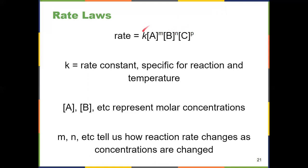The rate constant K is specific to the reaction — every reaction has its own rate constant — and it's also determined by temperature and surface area. If you change the temperature or the surface area, you would change the value of K.